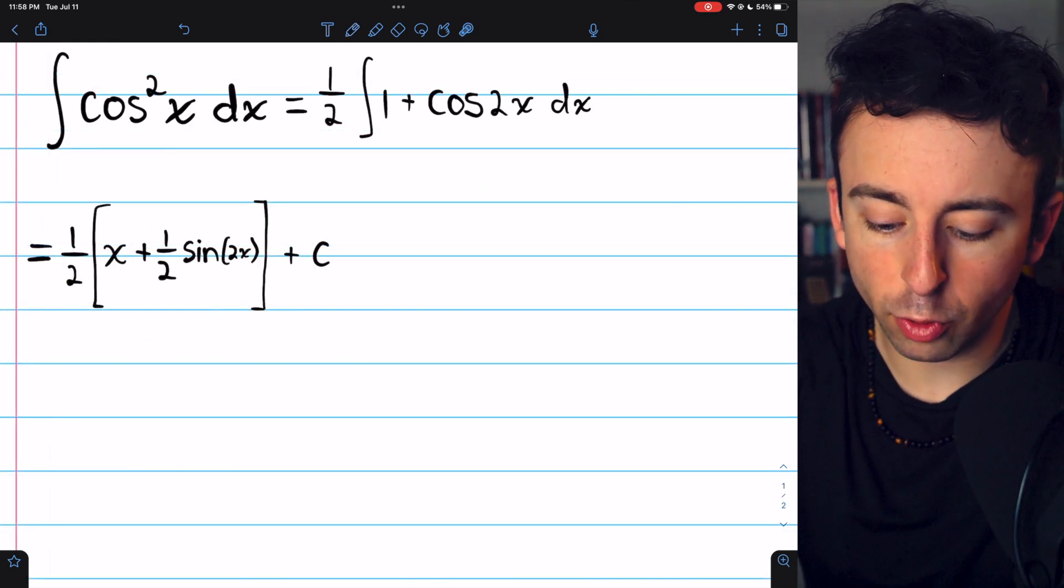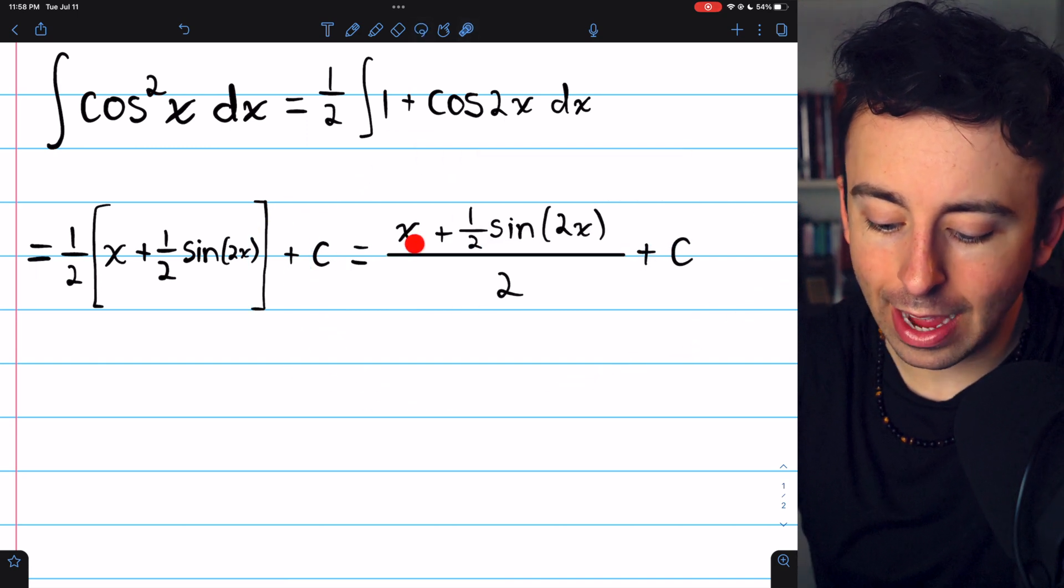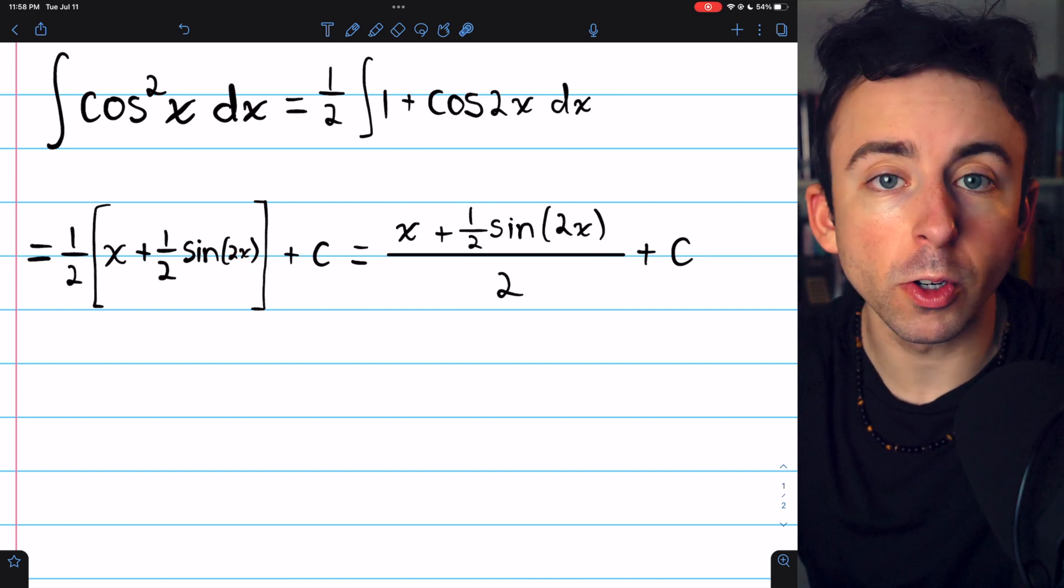So that's the integral. And if you want to distribute the 1 half through the brackets, we end up with this. x plus a half sine of 2x all over 2 plus the arbitrary constant.